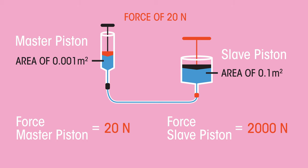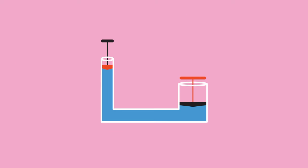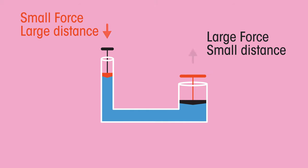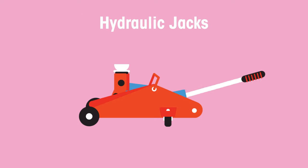Small force on a small area has resulted in a much larger force on the slave piston. It's the same principle that is used in hydraulics. A small input force has resulted in a large upward force. Exactly this, but on a much larger scale, is used to generate forces strong enough to lift things, like hydraulic jacks.